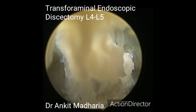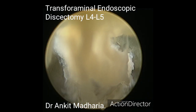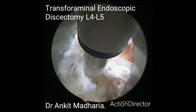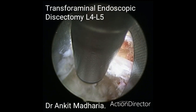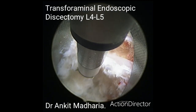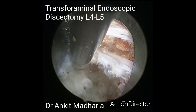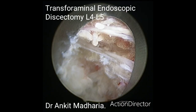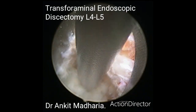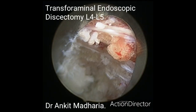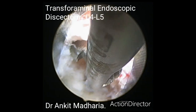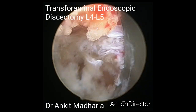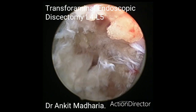After achieving intradiscal decompression, the cannula was withdrawn to show a half-in half-out view where you can see the bipolar probe working on the outer edge of the annular fibers. Further sub-annular decompression was achieved using graspers anterior to the annular fibers.